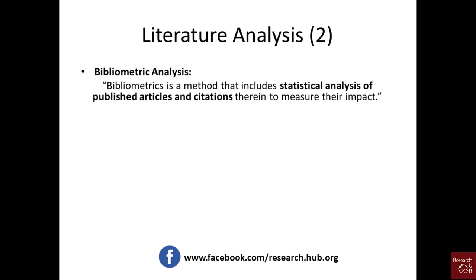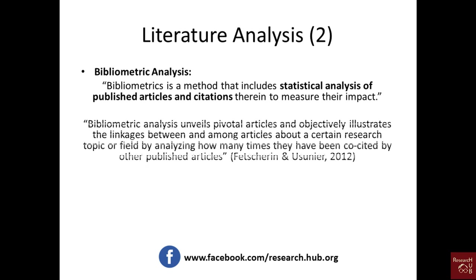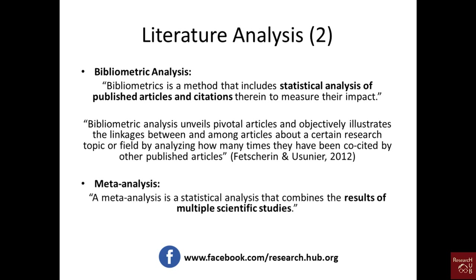Bibliometric analysis is a method that includes statistical analysis of published articles and citations to measure their impact. A more detailed definition: bibliometric analysis unveils pivotal articles and objectively illustrates the linkages between and among articles about a certain research topic or field, by analyzing how many times they have been co-cited by other published articles. There are other types too, like co-author analysis and co-occurrence analysis, which we'll cover later.